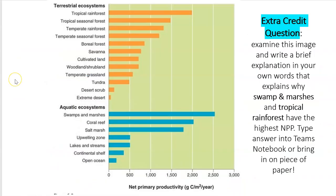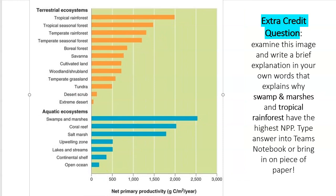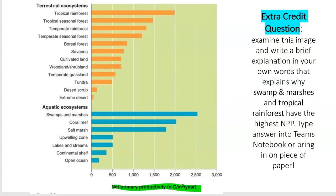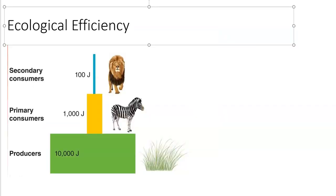I really like this graphic — it represents the net primary productivity in a bunch of different ecosystems around the world. I have an extra credit question: look at this image and write a brief explanation in your own words about why swamps and marshes and the tropical rainforests have the highest NPP of all the ecosystems here. This will also often evaluate the ecological efficiency of an area — that's really how much energy is being created and used throughout the entire ecosystem, not just through the plants.